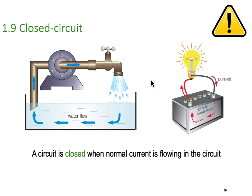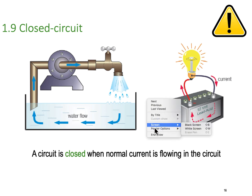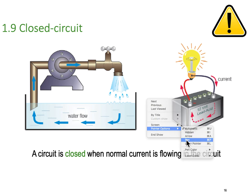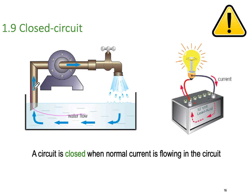Next is a closed circuit — this is like closing the switch. You can see here we've got our water flow up, round through our pump and back into our tank, and work is being done. Similarly with our electrical system, we have potential through the load, up through the lamp and back out. So we have current flowing — this is a closed circuit.